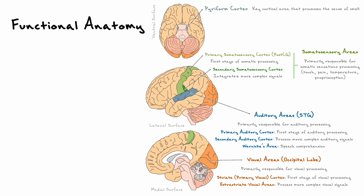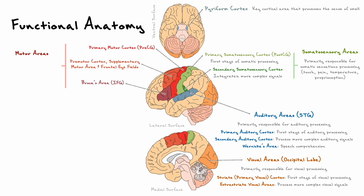The second type of cortical area that the brain possesses are the motor areas. The motor areas are all pretty much located in the frontal lobe and mediate the planning, control, and execution of voluntary movements. Similarly to the sensory areas, the different motor areas of the brain mediate different components of movements and are hierarchically organized. The primary motor cortex, which is located in the precentral gyrus, is considered to be the main output region for motor commands, but the planning and control of movements happens mostly in nearby regions called the premotor cortex and supplementary motor area.